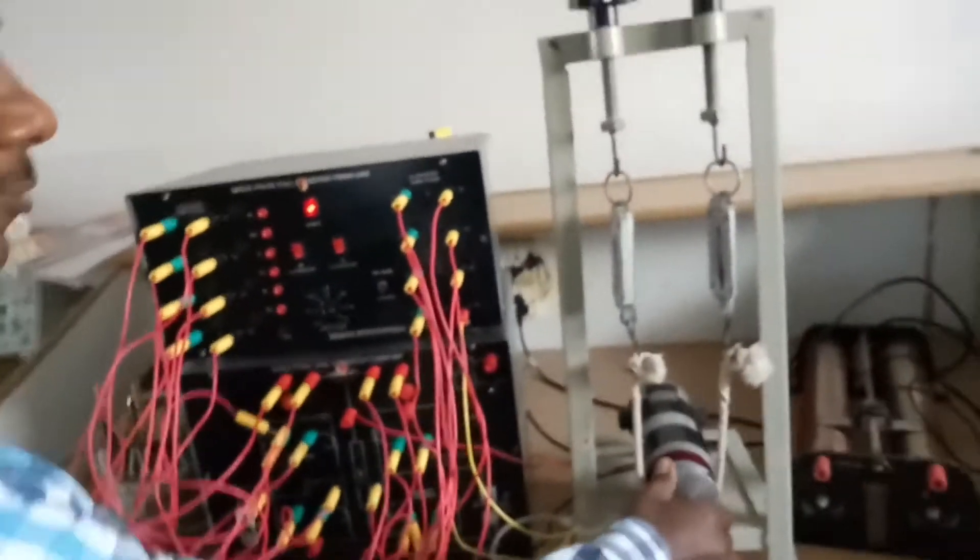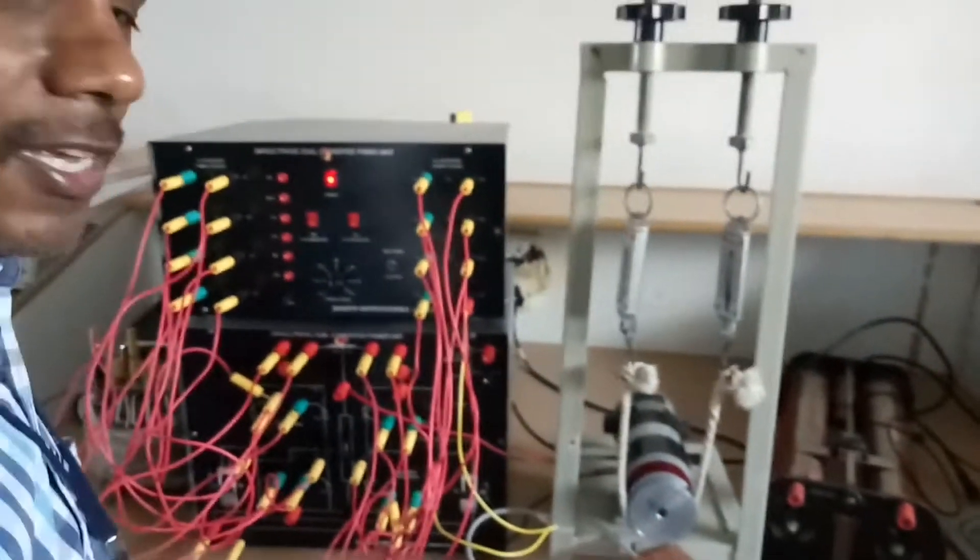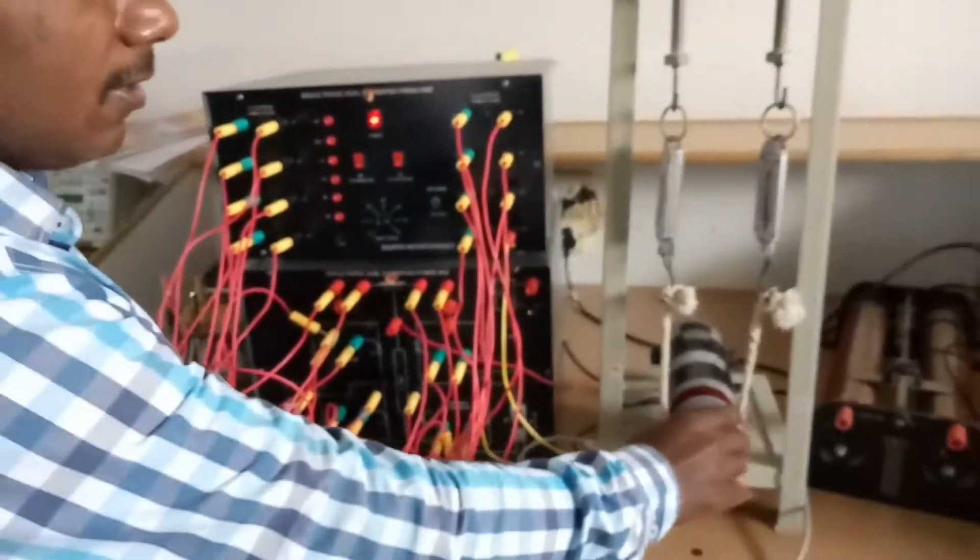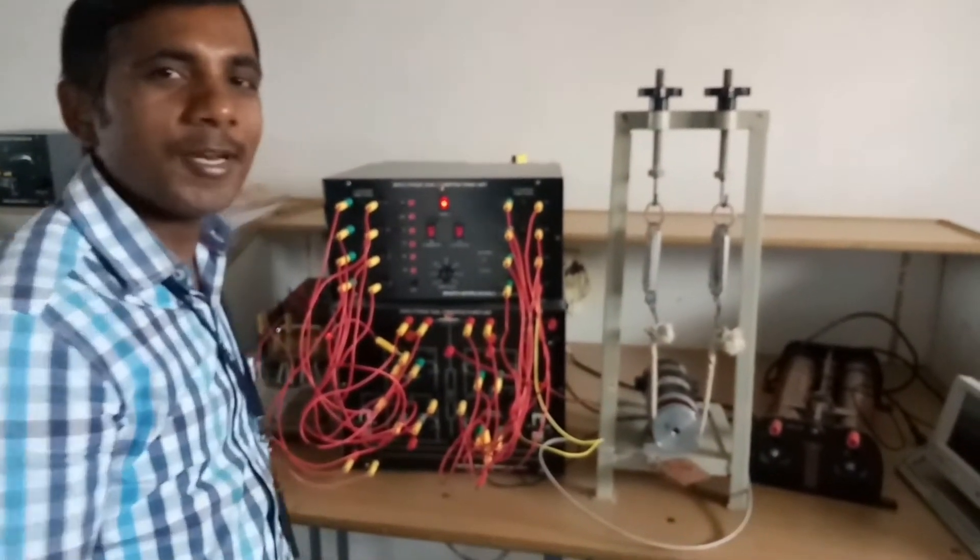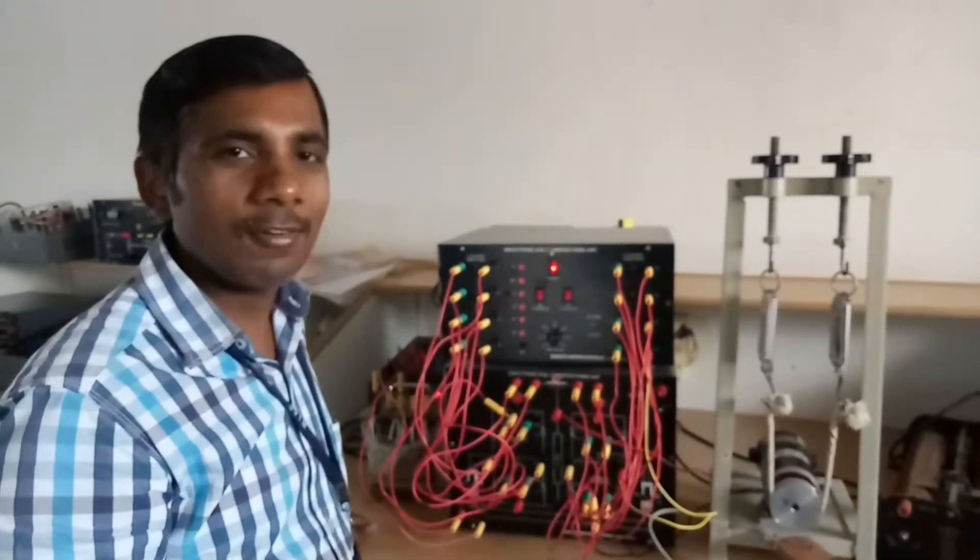We can see in circulating current mode we can see four quadrant operation. That is forward braking, forward reversing and forward rotation, reverse rotation. All four quadrant operations are possible with dual converter.